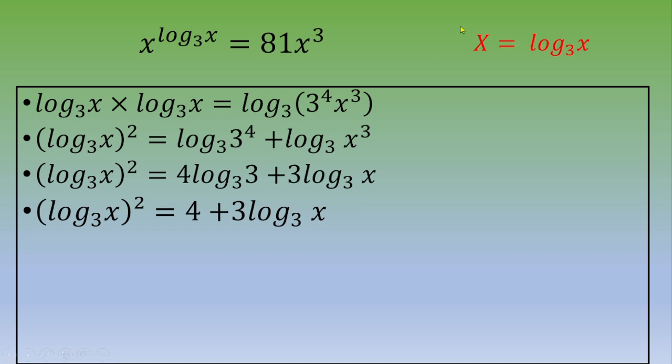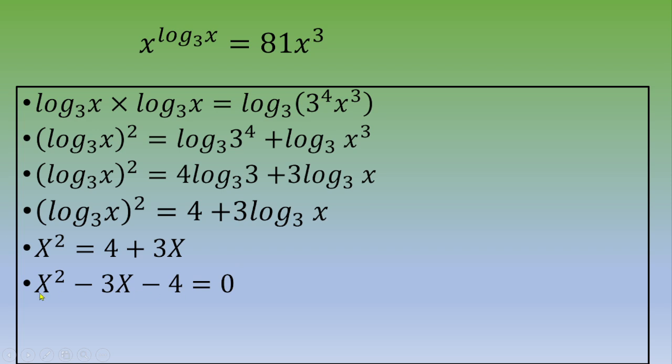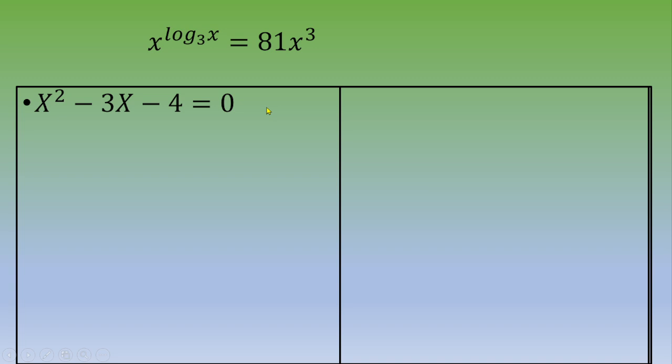Now let's call capital X equals log base 3 of x. We end up with capital X squared minus 3 capital X minus 4 equals zero. This is a quadratic equation. First, we are going to calculate the discriminant, and this is negative 3 squared minus 4 times negative 4.